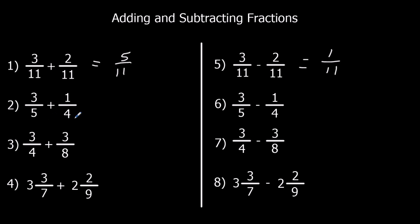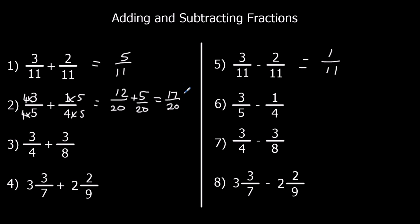So this time we have to make the denominators the same. We times this one by 4 and times this one by 5. So that's 12 over 20 plus 5 over 20, and that's 17 over 20. We can't simplify it — these numbers aren't in the same times table. This one: we could times this one by 8 and this one by 4, but there's a quicker way — we can just double this one. If we just double this one, both the bottom numbers would be 8. So 6 over 8 plus 3 over 8 is 9 over 8.